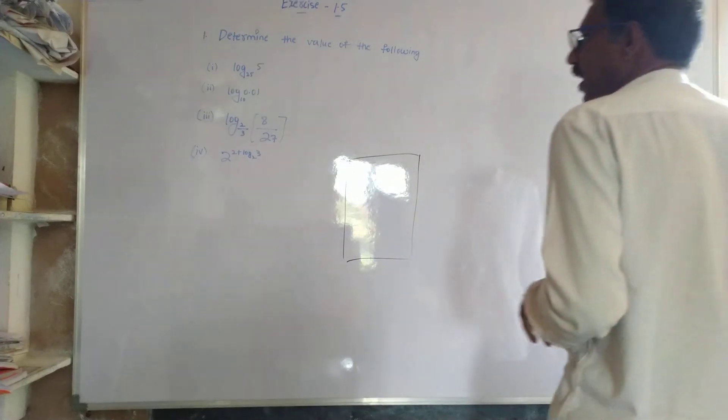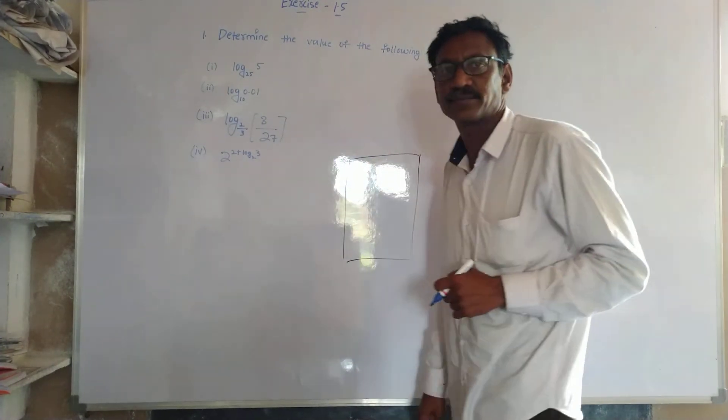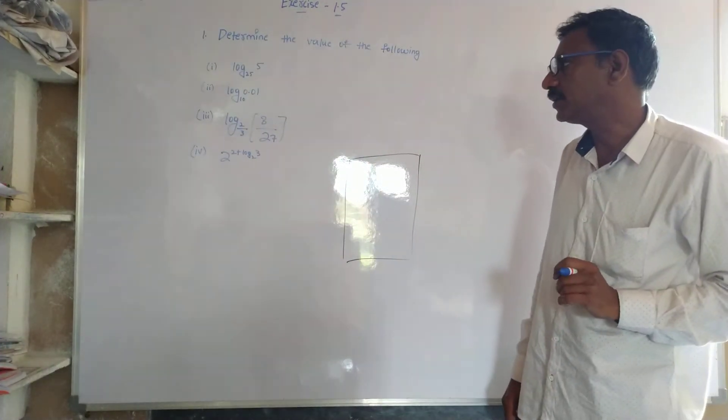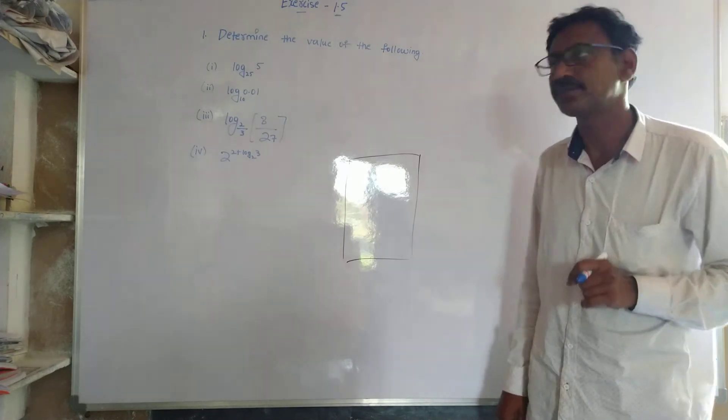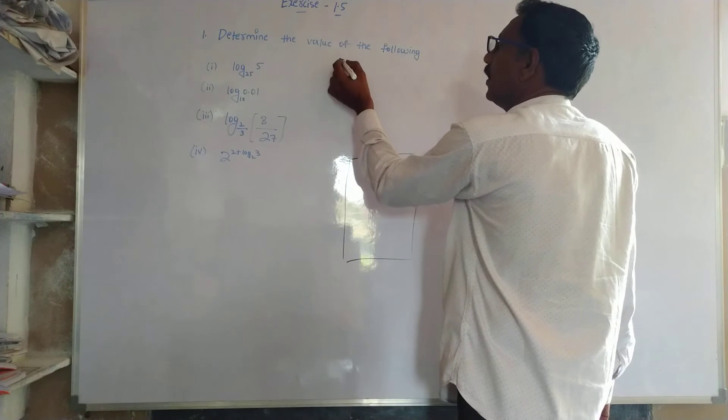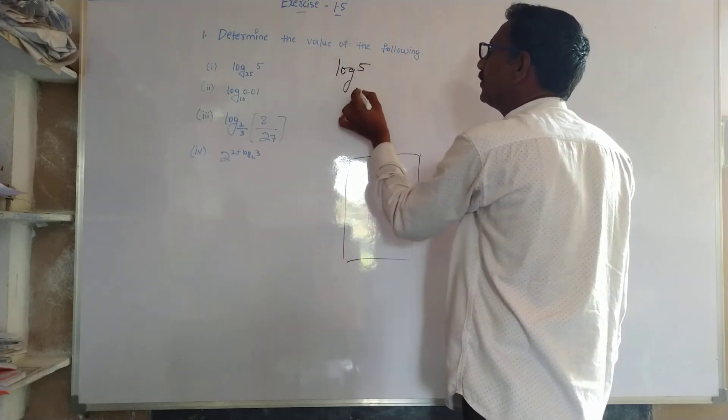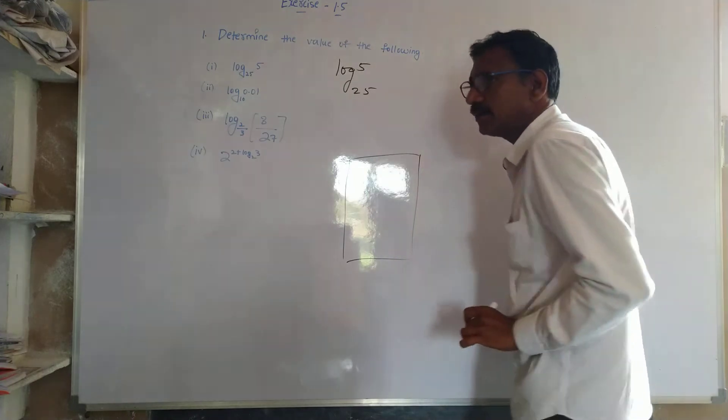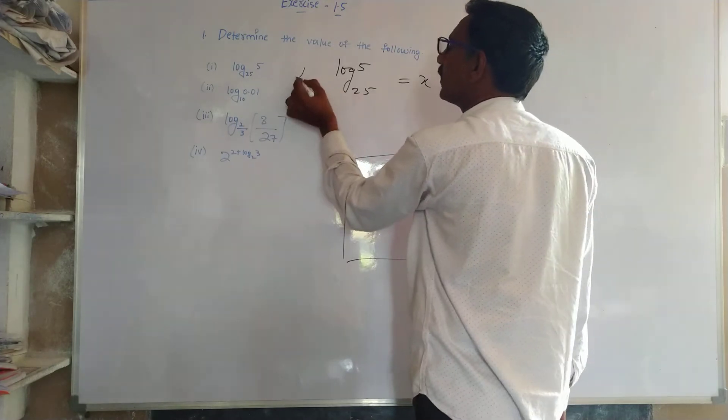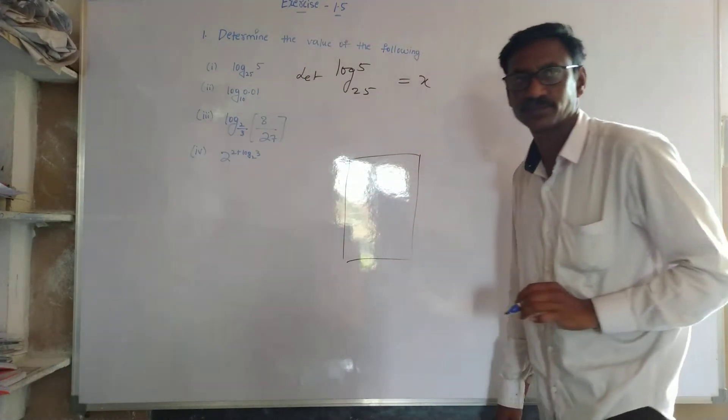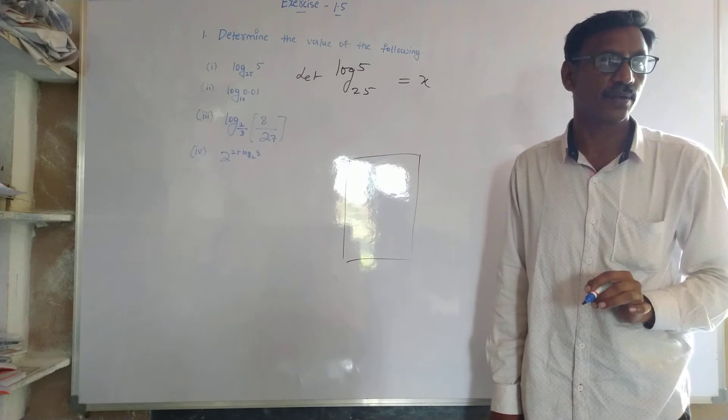Determine the values of logarithm 5 to the base 25. This is two types. First two types. Logarithm 5 to the base 25. The value says some x. Logarithm 5 to the base 25.